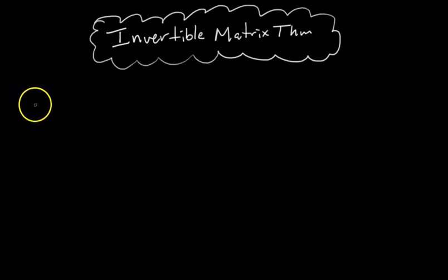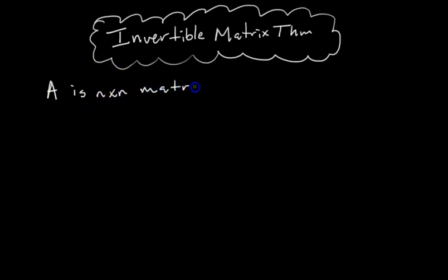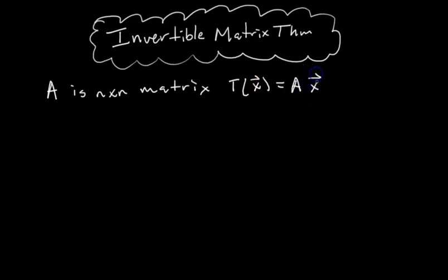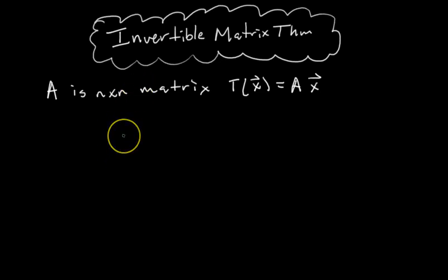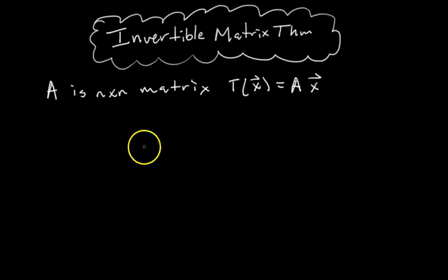The Invertible Matrix Theorem says that if you have some matrix A that is n by n — so it has n rows and n columns, meaning A is a square matrix — and we define a transformation T of x to be a linear transformation that has A as its standard matrix. Then I'm going to write 21 things that are all equivalent. If you can find one of these 21 things to be true, then the other 20 are also true. Or, equivalently, if you find any one to be false, the rest are automatically false.